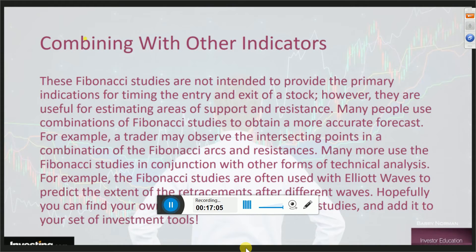These Fibonacci studies are not intended to provide the primary indication for timing the entry and exit of an asset, but they are useful for estimating areas of support and resistance. Many people use combinations of Fibonacci studies to obtain a more accurate forecast. Many use Fibonacci studies in conjunction with other forms of technical analysis — for example, Fibonacci studies are often used with Elliott waves to predict the extent of retracements after different waves. Later next month we have a two-week course in Elliott waves.